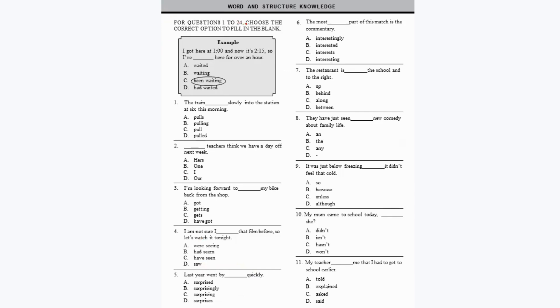For questions 1 to 24, choose the correct option to fill in the blank. For example: 'I got here at 1 and now it is 2:15, so I've been here for over an hour — what have you been doing?' The answer should be 'I have been waiting here for over an hour,' so option C is correct.